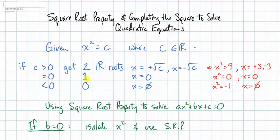If c is 0, I'll just have one root. Here's an example. If x squared is 0, the only value that makes this true is x equals 0 itself.